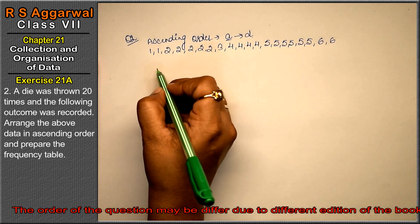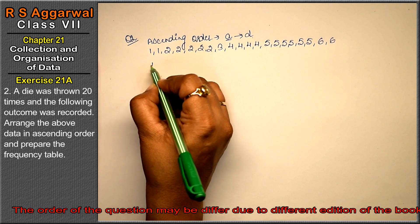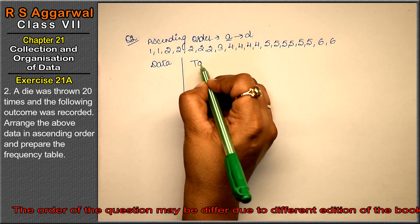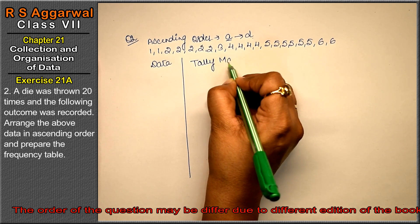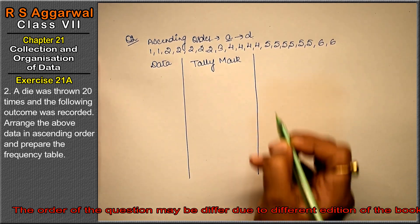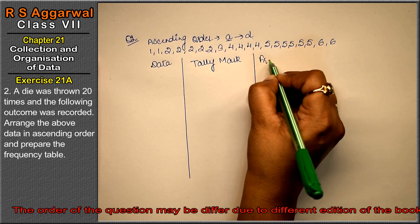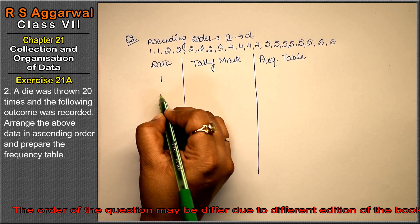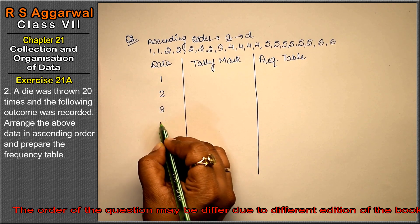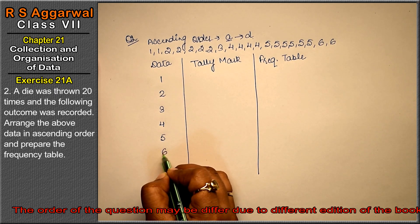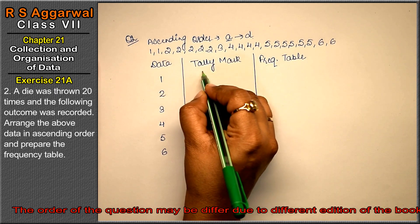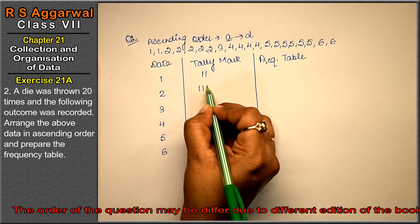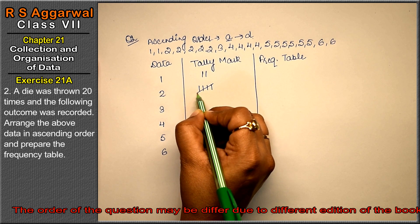Now we've done the ascending order. We will prepare the frequency table. The data contains numbers 1, 2, 3, 4, 5, and 6. Number 1 appears 2 times, so we draw 2 tally marks. Number 2 appears 5 times, so we draw 1, 2, 3, 4 tally marks and then cross on 5.